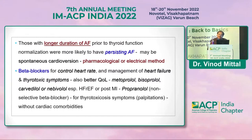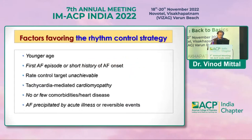Metoprolol, bisoprolol, carvedilol, and nebivolol are equally important for rate control. Propranolol is non-selective and should be used only for thyrotoxic symptoms such as palpitations. For all other specific conditions, selective beta-blockers are required. Factors favoring rhythm control include young age and first episode of AF.